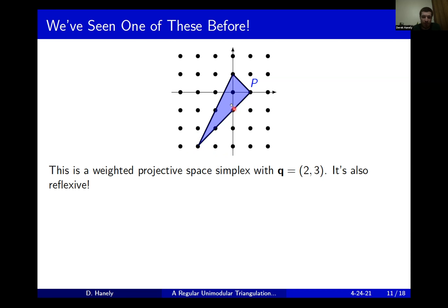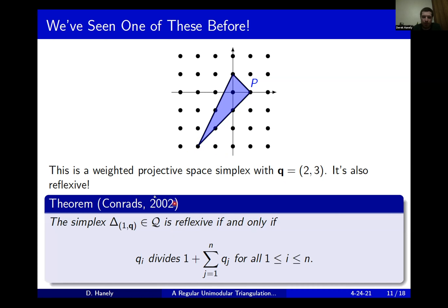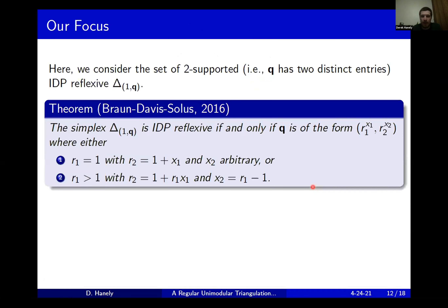I claim this simplex is both reflexive and IDP. Reflexivity is straightforward to see from a complete characterization by Conrad, which says a weighted projective space simplex is reflexive if and only if each entry in the q vector divides the total sum of weights. Here, adding two and three plus one more gives six, and both two and three divide six, confirming reflexivity. For the remainder of the talk, we focus on the subset of delta_1(q)'s that are two-supported, meaning q consists of exactly two distinct entries.